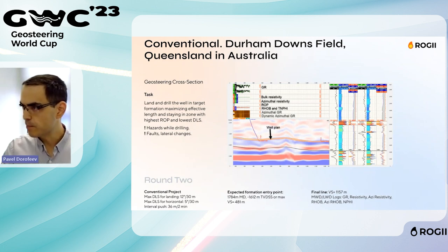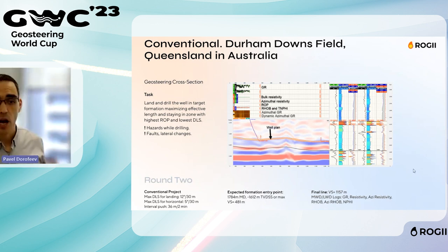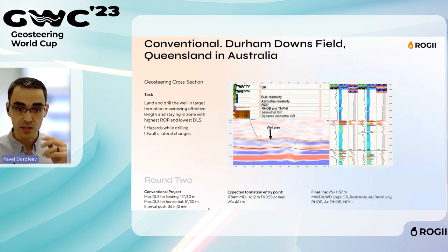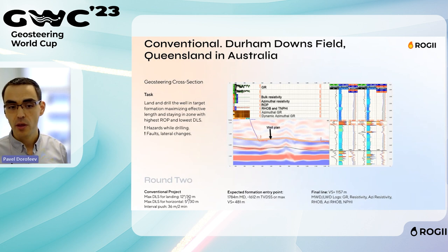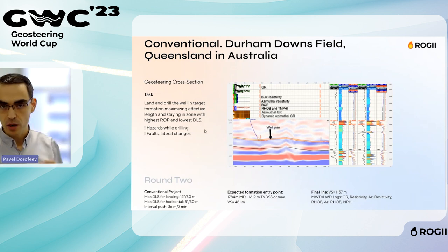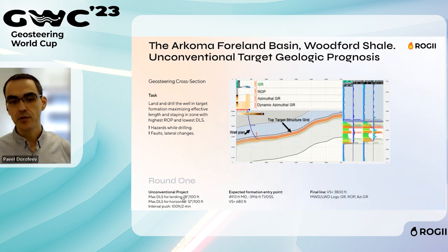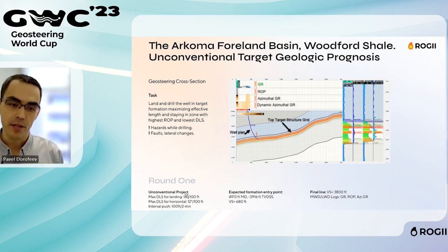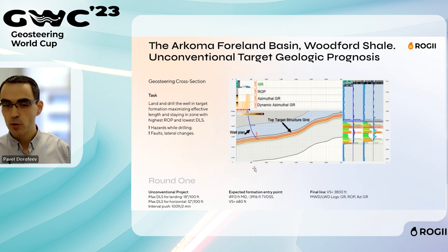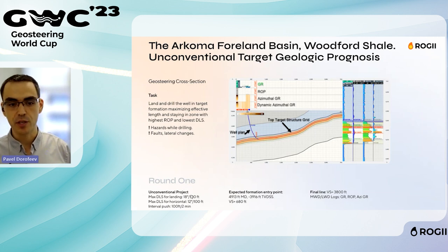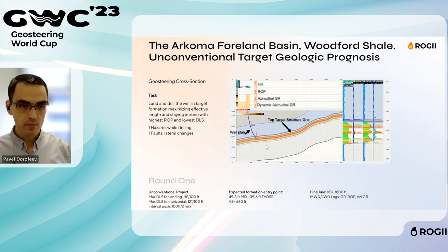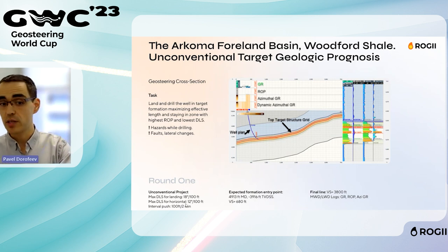DLS stands for Dog-Leg Severity — it's basically how fast you change the curve of your well. For example, 12 degrees per 30 meters in the metric system, or degrees per 100 feet in the imperial system. It describes how curved your well can be. There are specific DLS limitations for each well, and you'll see these values in the project automatically — you don't need to remember or manually adjust them.